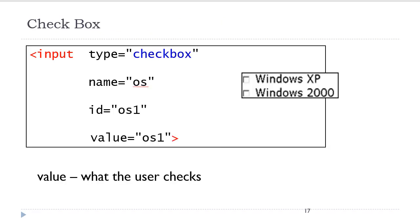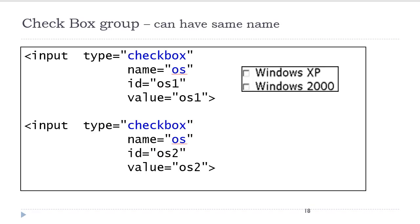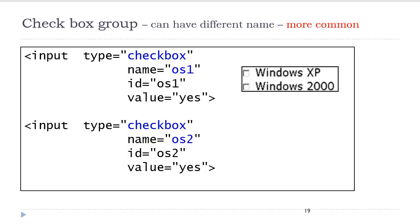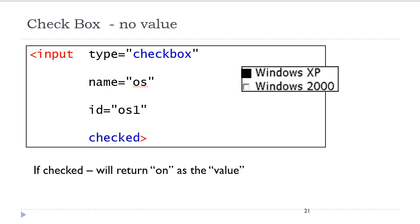Checkboxes are very similar to radio buttons. They are coded using the input tag. The value of the type attribute is checkbox. They will have a name and an ID attribute, and because the user is just clicking on that box in the browser, we need to code in the value attribute to indicate what choice they have made. There are two ways to code groups of checkboxes. They can share the same name, and if they do, you need to make sure that the server-sided script is able to retrieve them all using that same name. The more common way is to give them all different names. Checkboxes can be checked by default by entering the checked attribute inside the input tag. If a checkbox does not have a value and it is checked, it will return on as the value.